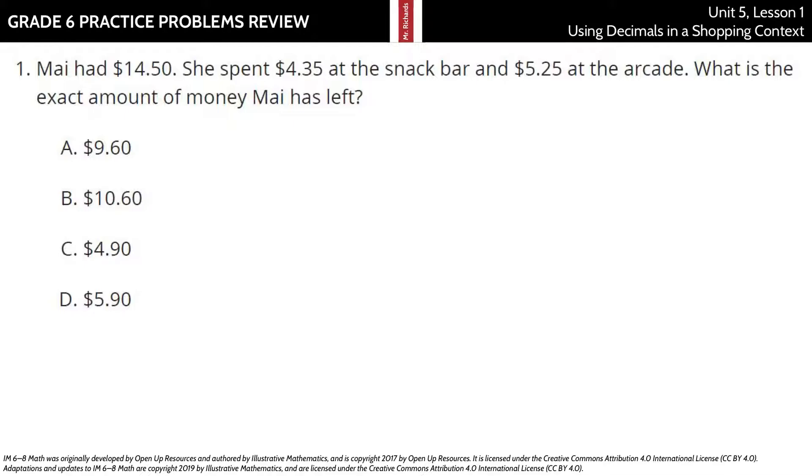Mai had $14.50. She spent $4.35 at the snack bar and $5.25 at the arcade. What is the exact amount of money that Mai had left? Well, if we take the amount she spent at $4.35 and add that to the $5.25 from the arcade, 5 plus 5 is 10 for those pennies, 10 cents. The 1, 3, and 2 add up to 60 cents. No more carrying, and then we have here $9.60.